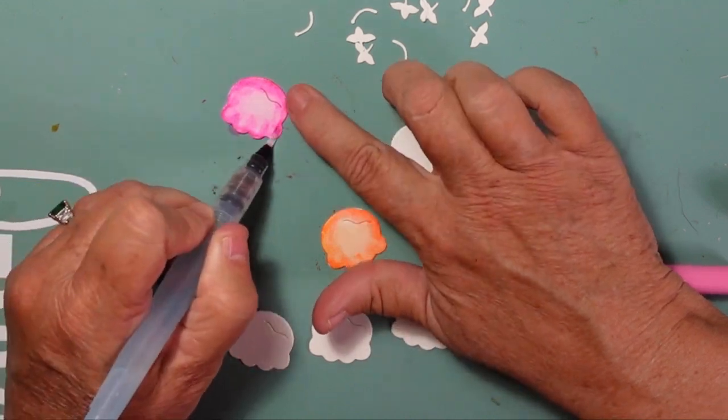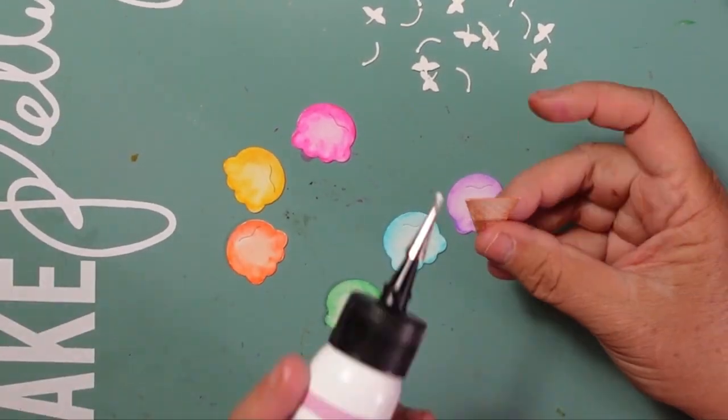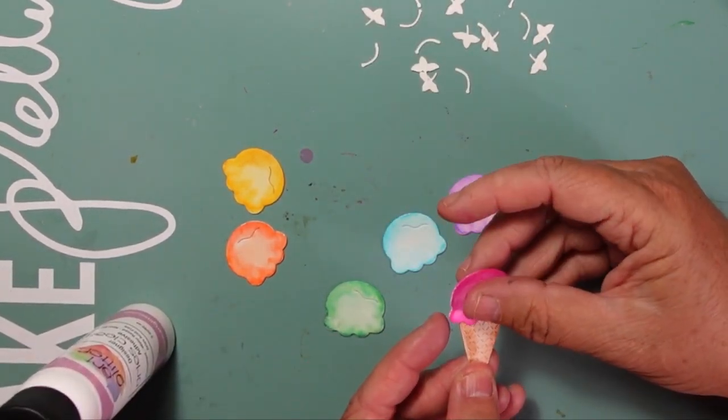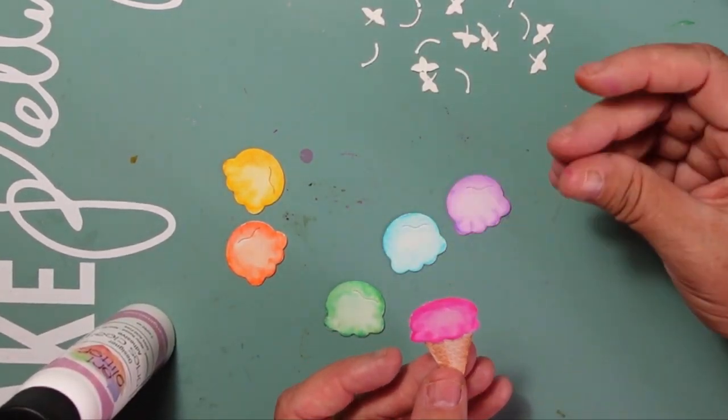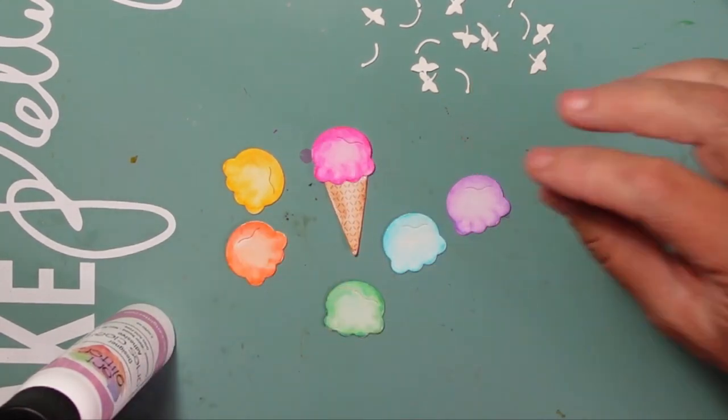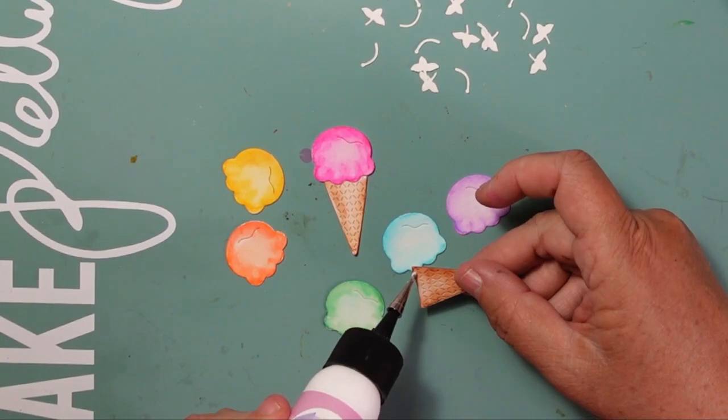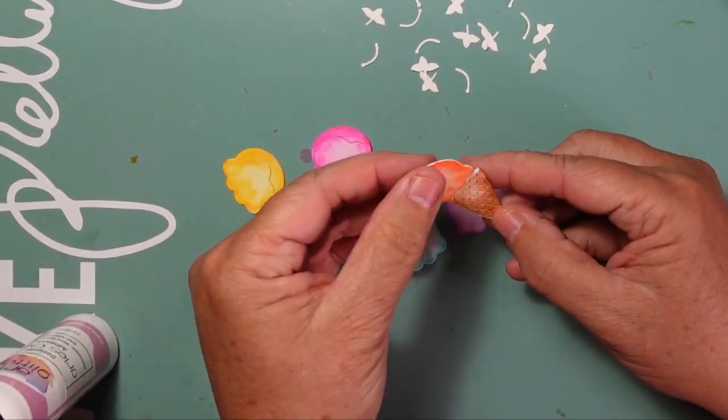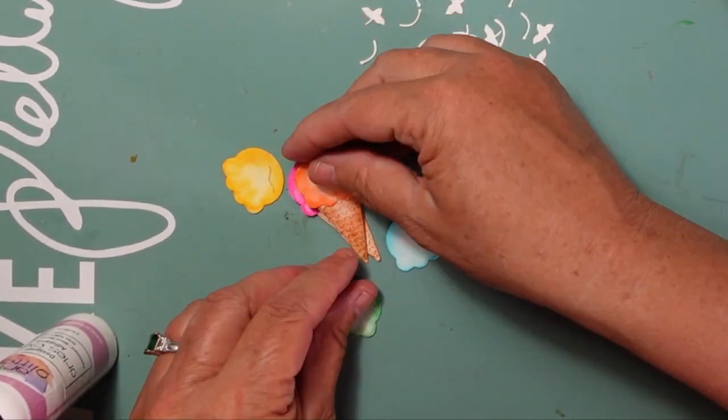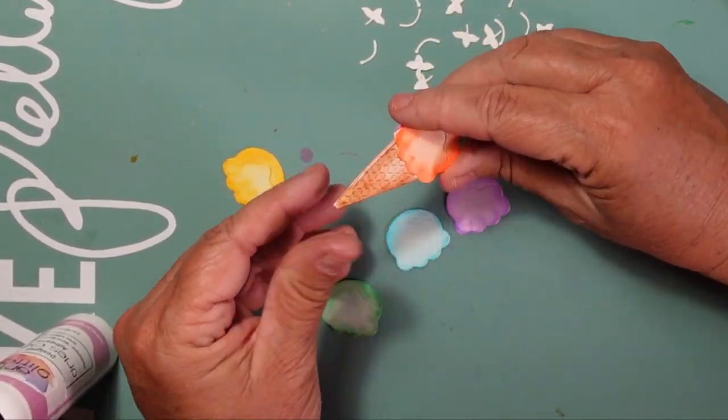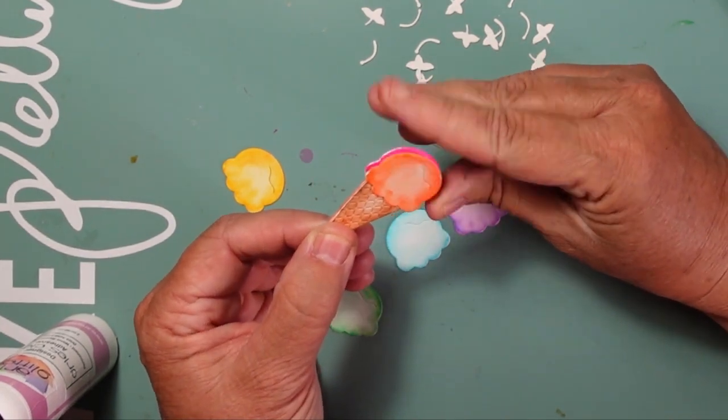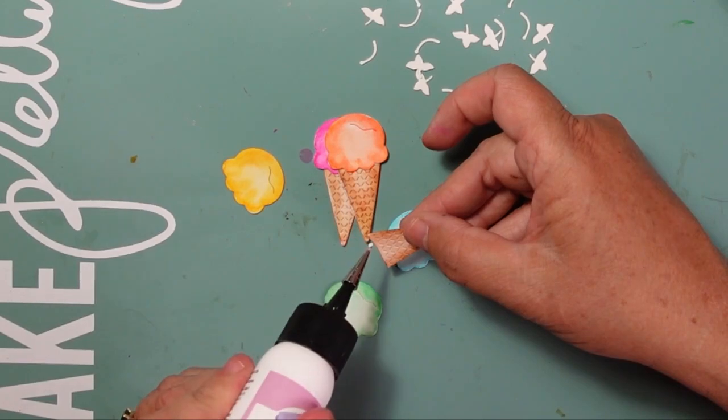I'm going to start building my cones, and I wanted to just show you this quickly. Obviously I'm adding the scoop of ice cream to the cone, but the thing that I wanted to really highlight here is that I'm going to use wet glue so that I have a little bit of wiggle room, and I'm going to line these up with each other.